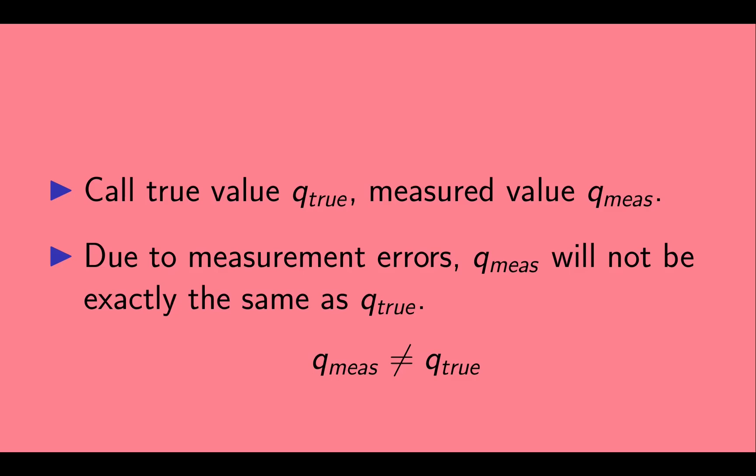We'll call the true value of that quantity q true, and the measured value q measured. We don't know q true. Q measured is the value we get from our experiment.